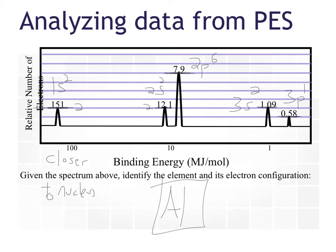All the electrons do have different amounts of energy, and you can kind of see at the energy breaks — there's a shell, there's a shell. But within each shell, there are different energy requirements between the subshells, S's and P's.